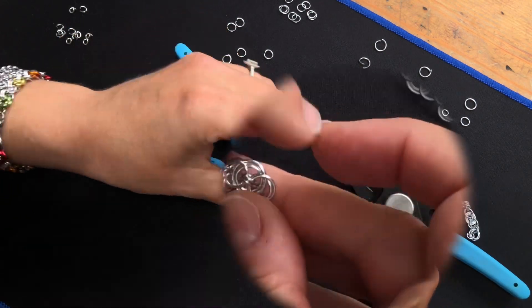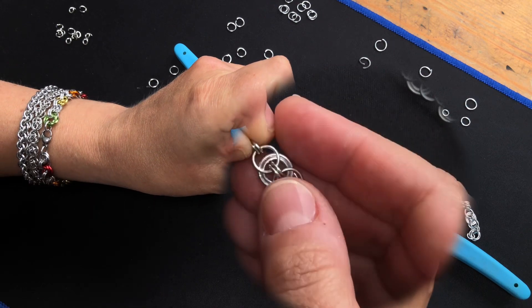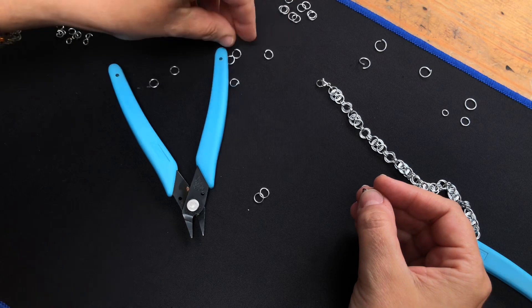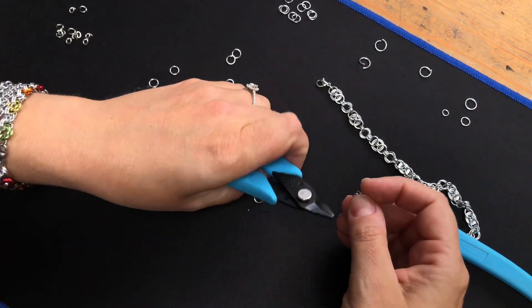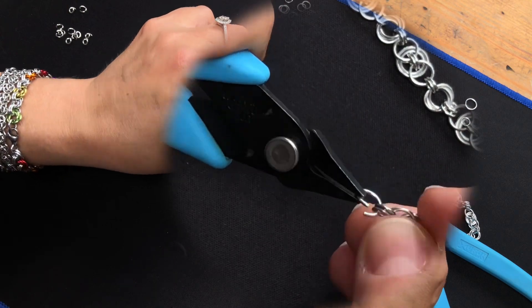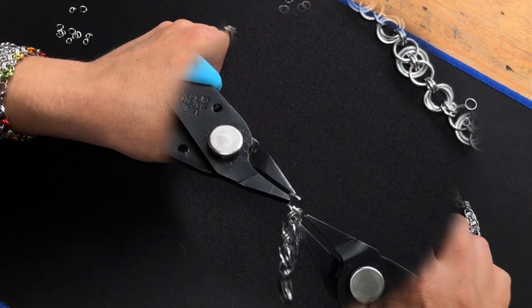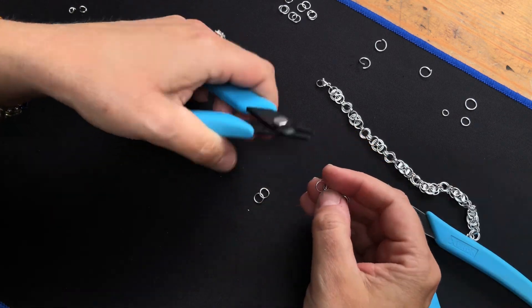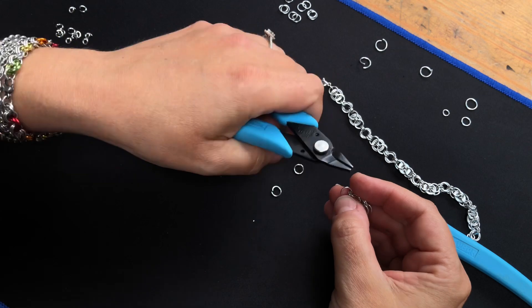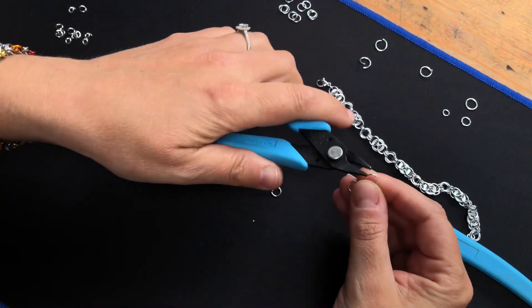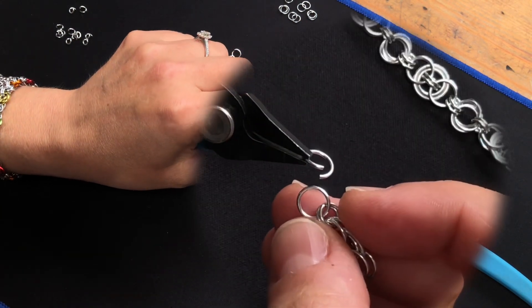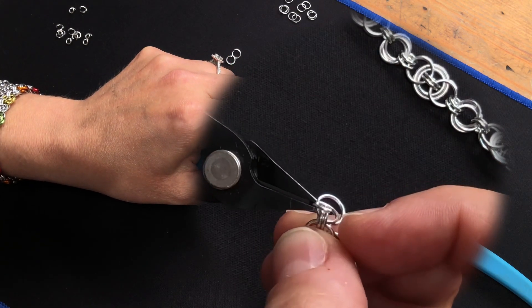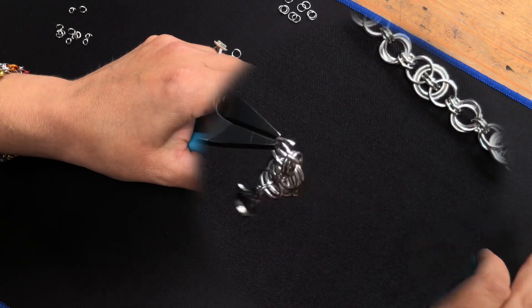And now we want to do a mobius part. To do a mobius, we want three of the medium rings. I'm going to put the first one in there. And with a mobius, you've basically got three rings of the same size, and they're all going through each other. So take a ring, put it through that one, but then put it through the two small ones as well, and close it up.